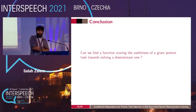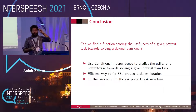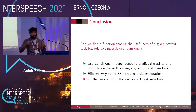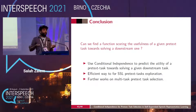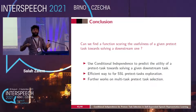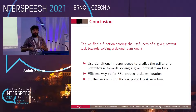To summarize: can we find a function scoring the usefulness of a given pretext task? Yes — conditional independence. It's grounded in theoretical work, and we can estimate it quite accurately with our estimator. This opens possibilities for avoiding the heavy empirical two-phase pipeline when exploring self-supervised learning pretext tasks. There is also new work from our team on better multi-task pretext task selection, available in a preprint released a few weeks ago.